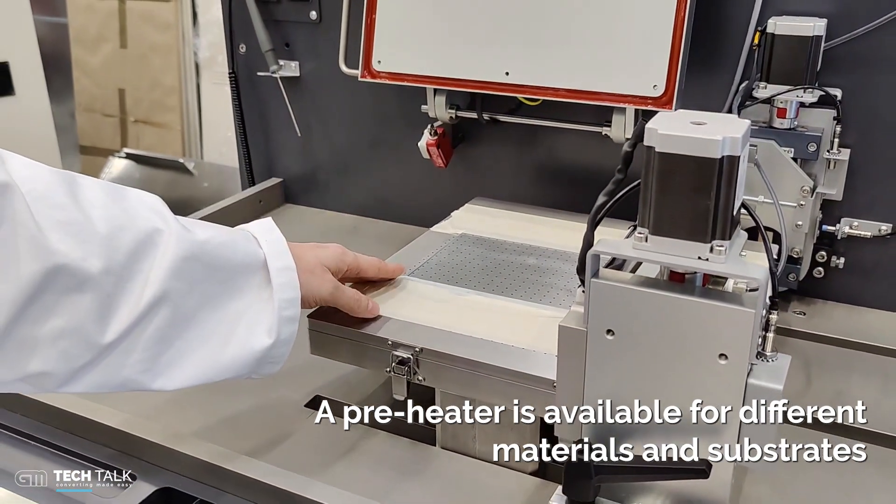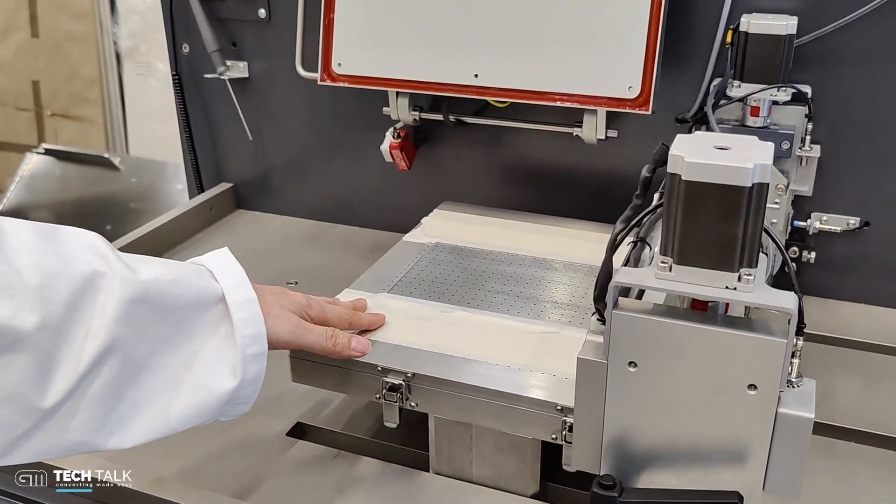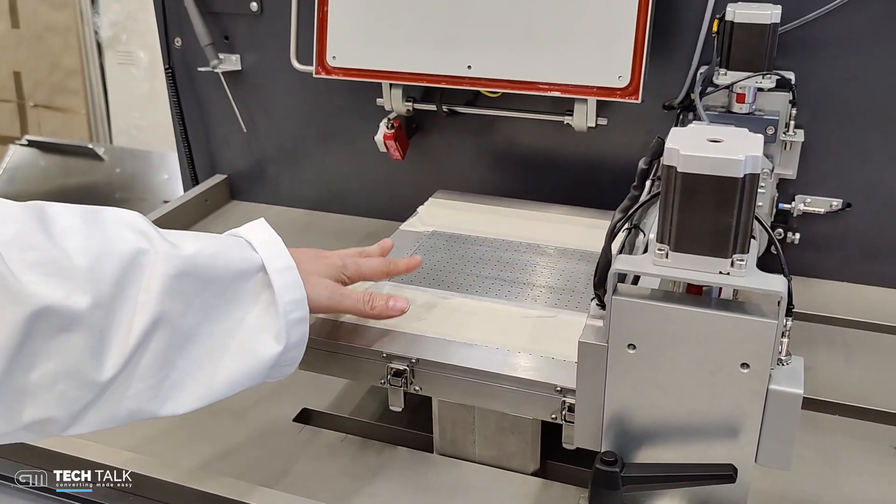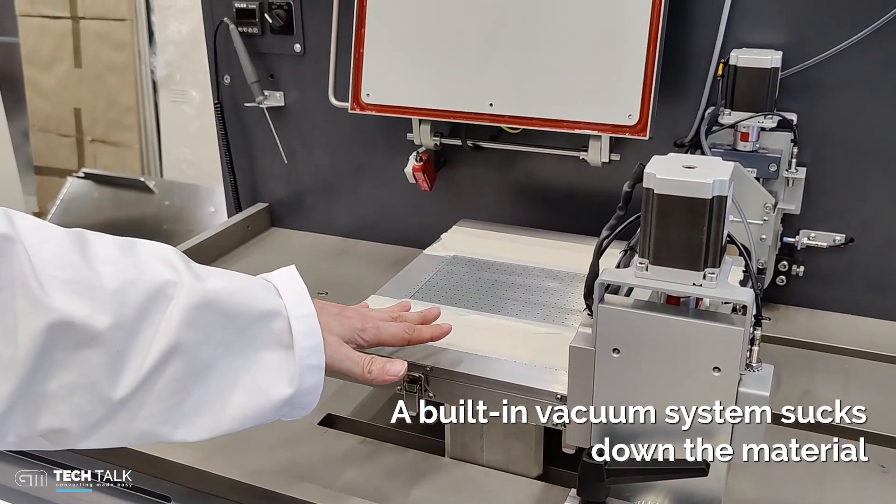Now we have taped the material up because it's a thick glass plate. It could also be a thin film and then we can utilize the built-in vacuum system in the machine. We can enable a small vacuum that will suck the material down.